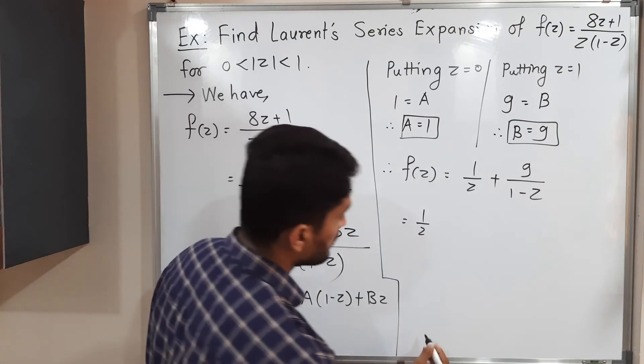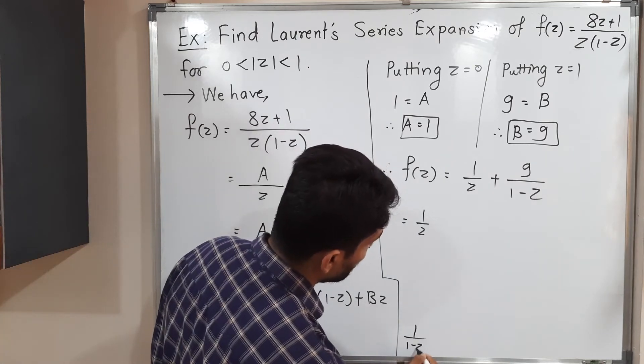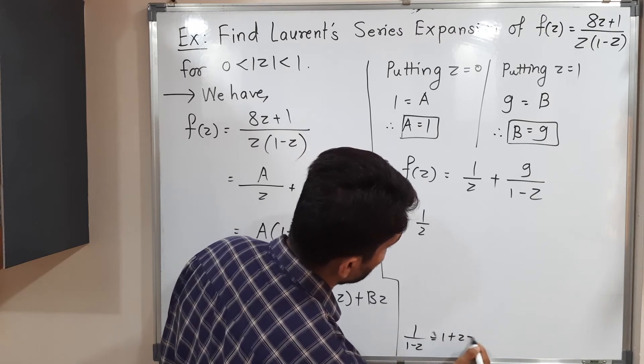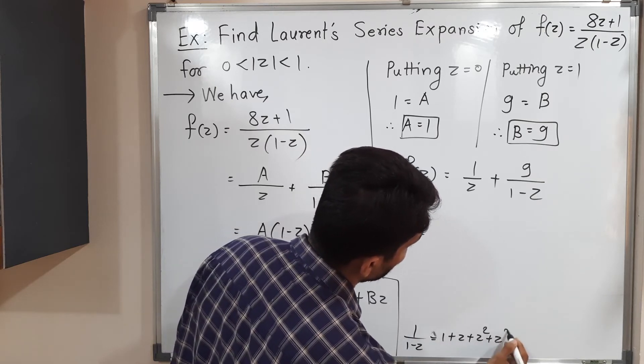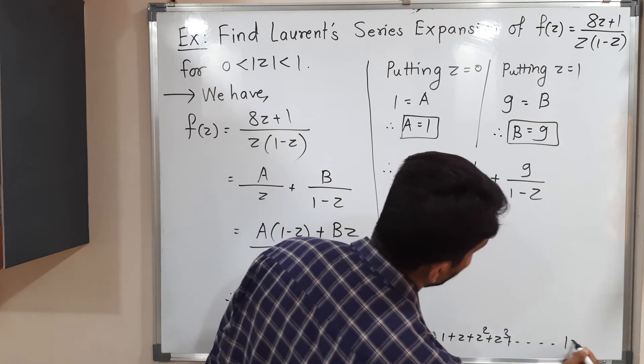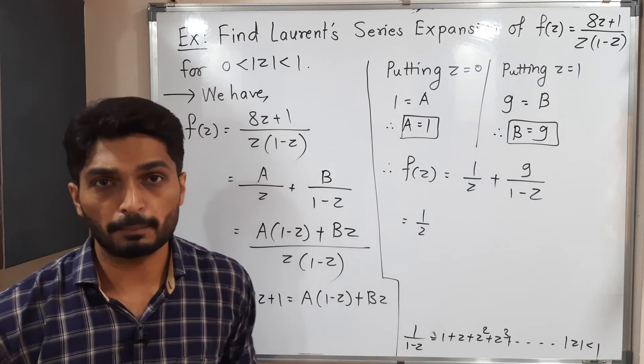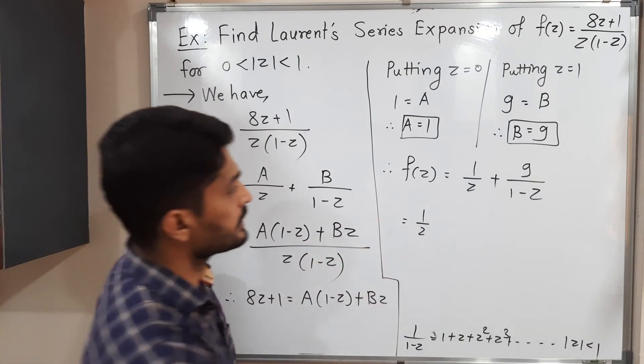So I am going to use the series. The series is 1 upon 1 minus z equals 1 plus z plus z² plus z³ and so on. And the condition is again |z| less than 1. Fortunately that condition is already provided in the example, so that is why we can use the series.